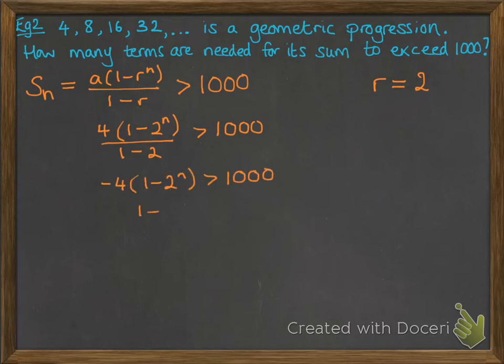When we get to this step we need to divide through by minus 4. That reverses the inequality, and it only reverses because we're divided by a negative number. You only reverse the inequality if you're dividing or timesing by a negative, otherwise just leave it as it is.